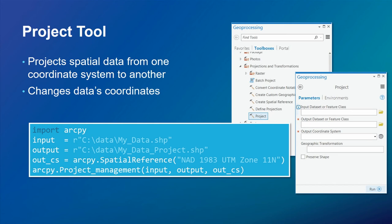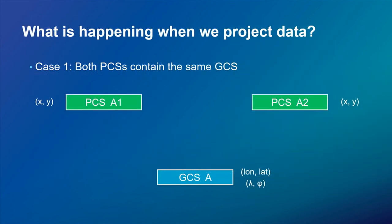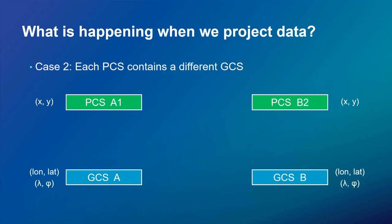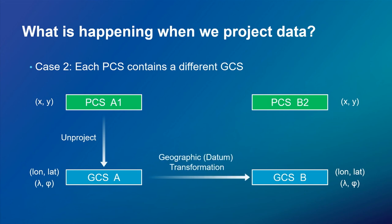The Project tool actually converts your data between different coordinate systems, shown here in the tool UI and in ArcPy. When projecting data from one PCS to another with the same datum, we first unproject back to lat/long values and then project forward into the output PCS. If we also need to change the GCS, we additionally apply a geographic or datum transformation to get from GCS A to GCS B, then reproject to the output PCS.